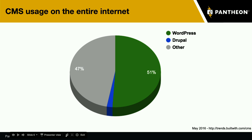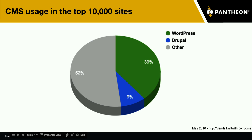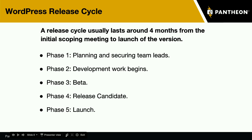As a frame of reference, according to builtwith.com, across the entire internet for any website using a CMS, WordPress is 51% of that market and Drupal is too small to see at 2%, with 47% being anything else. As we look at larger, more heavily trafficked sites, Drupal is a bigger player at 9% compared to 39% for WordPress. This partially confirmed my incoming assumption that Drupal is better suited towards more complex websites, though WordPress is more than just a blogging tool — more than I remembered from 2006 and 2007.